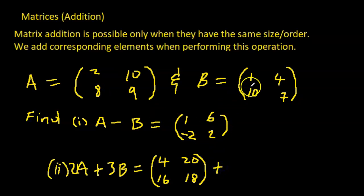And 3B, the exact same idea. It's 3 times each element in B. So 3B would be 3 times 1, that's 3, 3 times 4, that's 12, 3 times 10, that's 30, and 3 times 7, that's 21. Alright, so 2A would mean 2 times everything in A, and 3B would mean 3 times everything in B.